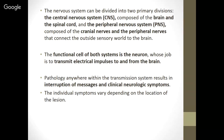We can divide the nervous system into two primary divisions: central — brain and spinal cord — and peripheral, which is the cranial nerves and peripheral nerves that connect the outside sensory world back to the brain. The functional cell of both systems is the neuron, whose job is to transmit electrical impulses to and from the brain. If there is pathology anywhere within the transmission system, this results in an interruption of health messages and clinical neurologic symptoms. Individual symptoms will vary depending on the location of the lesion. Our job as technicians is to help the doctor with tests and to observe differences between normal and abnormal within the nervous system.